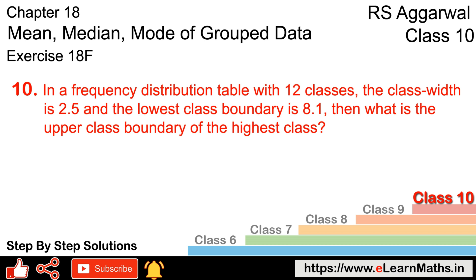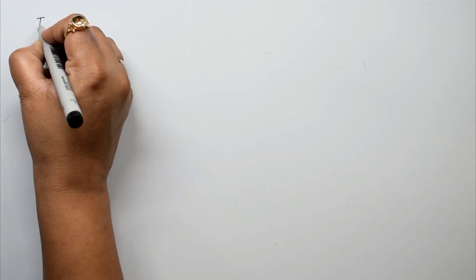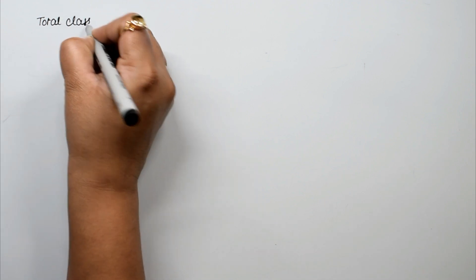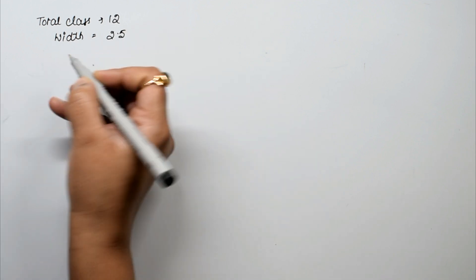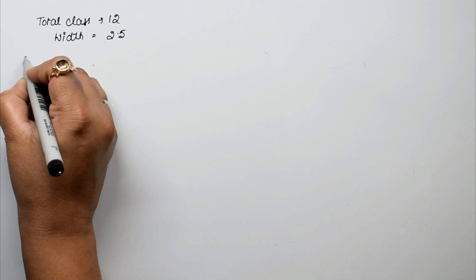Let's do question number 10 of Exercise 18f on mean, median and mode of grouped data. The question gives a frequency distribution table with 12 classes. The class width is 2.5, the lower class boundary is 8.1, and its lower class limit is 8.1. We need to find the upper class boundary of the highest class. Total classes are 12 and width is 2.5, starting from 8.1.